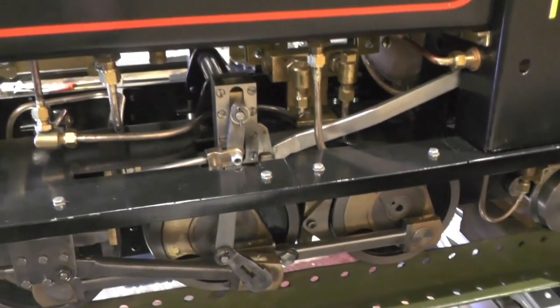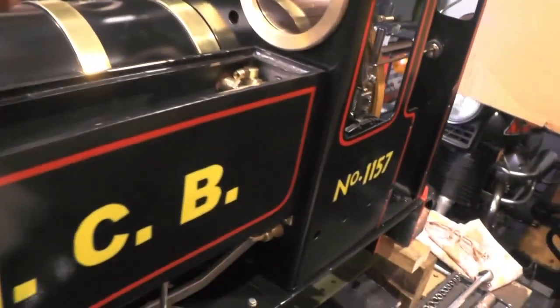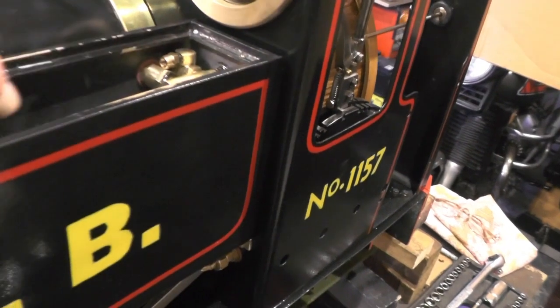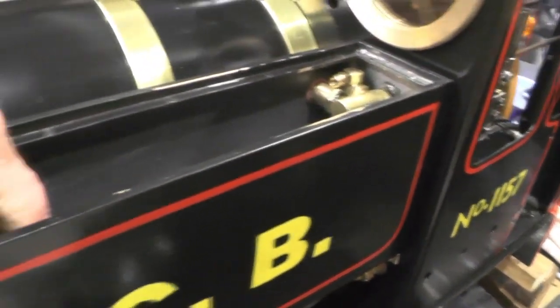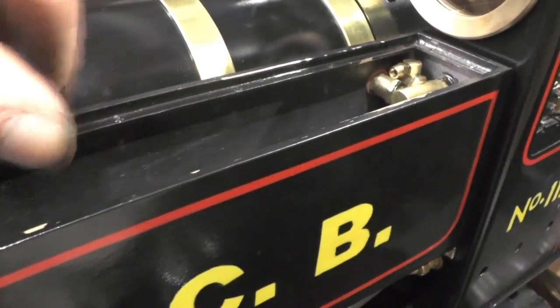That's the bypass valve and the axle pump all fitted now. All I've got to do now is put a pipe into the bypass valve outlet just to bring it here and then it'll terminate with my filler cap.